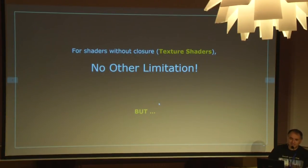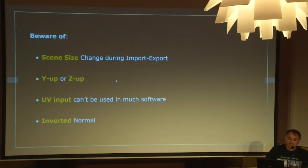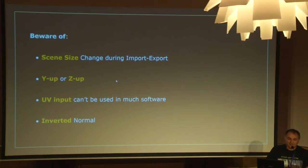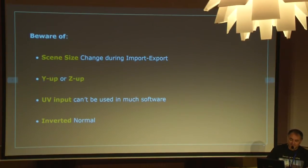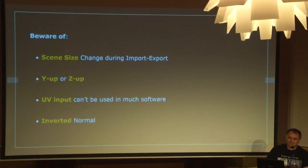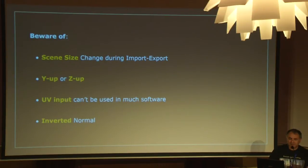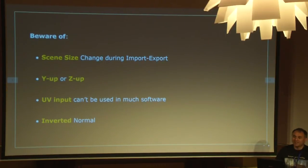There are some other limitations which are just the import-export of the scene. Like scene size change — if you have a scene 10 times bigger in one renderer than another, your checker will be 10 times smaller in the final render. One stupid thing is Y-up vs Z-up — you will have your shader flipped. UV input is also a nice surprise: U and V variables work very well with V-Ray and not very well with Blender. Blender is well-known because you can have as many UVs as you want in one object, so what is the UV variable in that case?